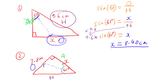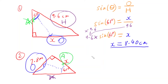Looking at the sides I have, I don't have anything about the hypotenuse. I have my opposite side and my adjacent side is the unknown I'm trying to find. So I need the trig ratio that has opposite and adjacent in it — that would be the tan ratio: tan of the angle equals the opposite side divided by the adjacent side.